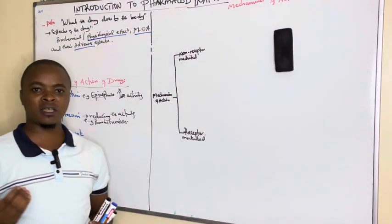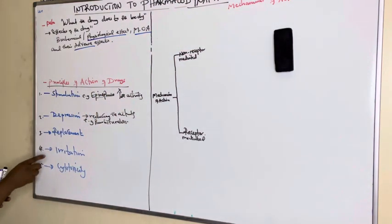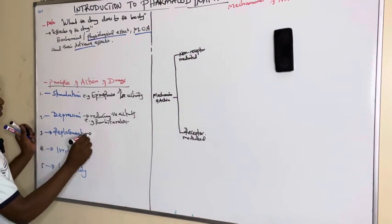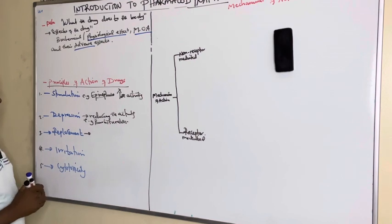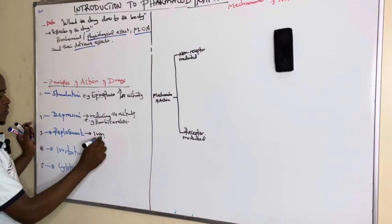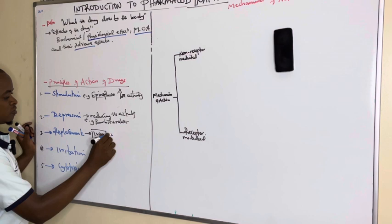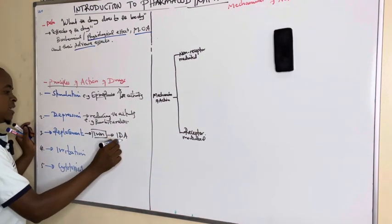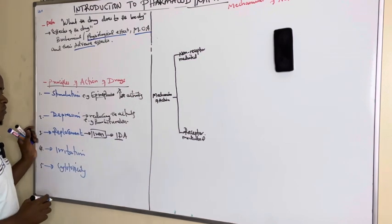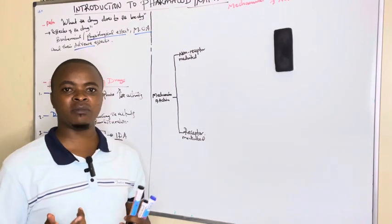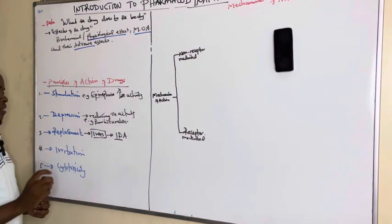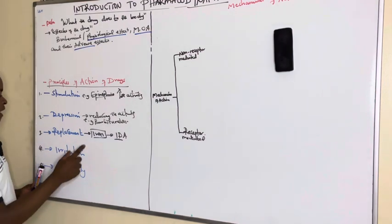We give barbiturates to convulsant patients to stop seizures. Other drugs act by replacement, whereby the drug replaces the natural active metabolite. For example, iron in the ferrous state is given to treat people with iron deficiency, to replace the natural iron. Similarly, in the deficiency of vitamins we can give synthetic vitamins — if the body lacks some nutrients we can replace them by giving drugs.